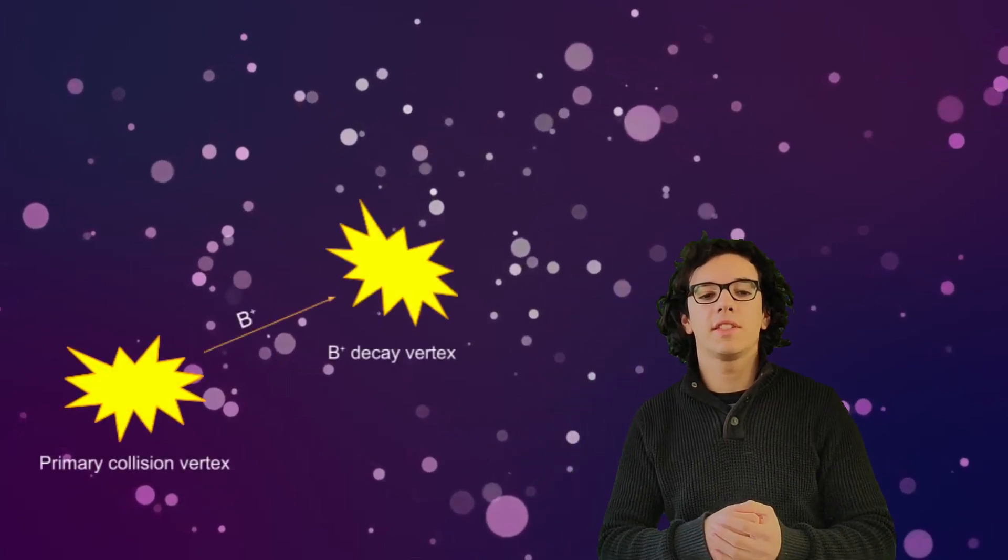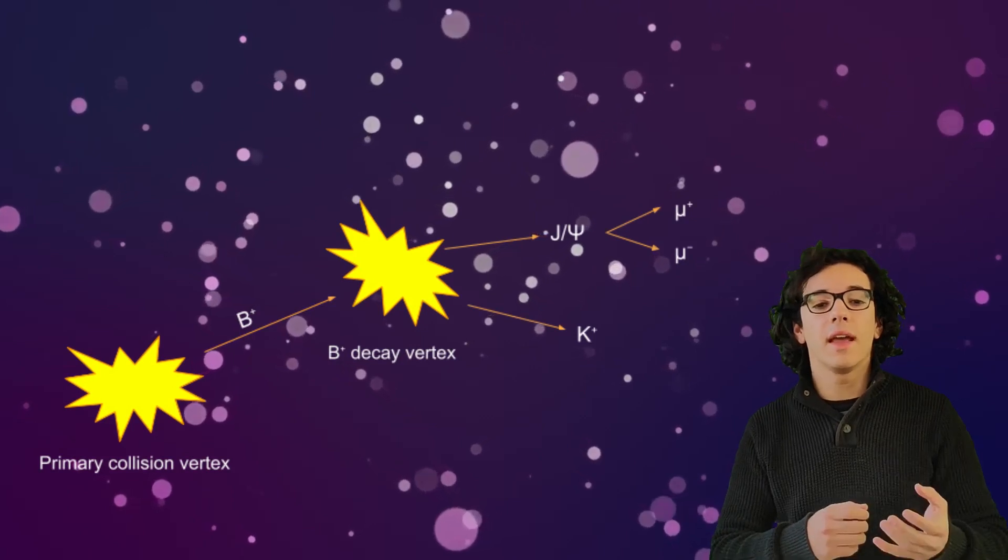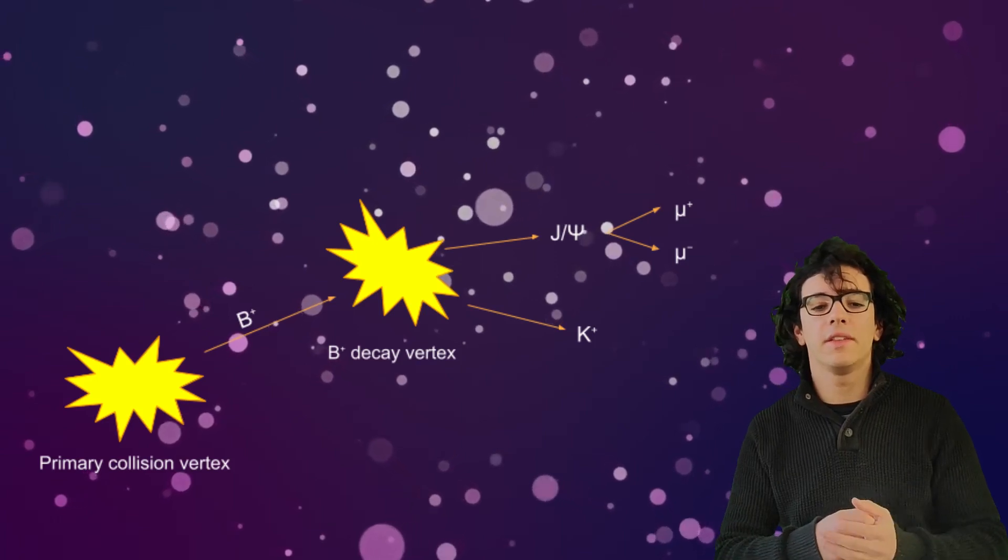Why B mesons, you might be asking? Well, this choice is due to two important qualities. Firstly, they have a longer lifetime, which means they will suffer larger displacements from the primary collision vertex before decaying, and will therefore create a secondary decay vertex, which is much easier to distinguish from the rest of our data.